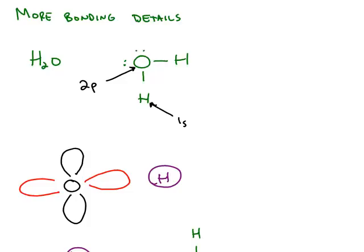Next, we're going to look at more details about bonding. So, for example, in the Lewis structure for water, we have two non-bonding pairs on the oxygen and two bonding pairs of electrons. We know that the last occupied subshell for oxygen is the 2p subshell, and for hydrogen, it's the 1s subshell.